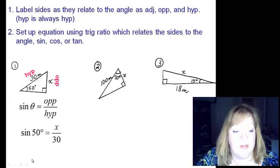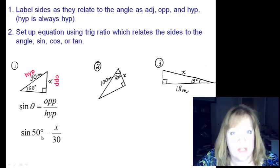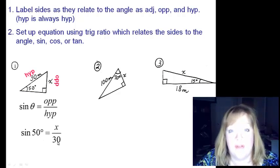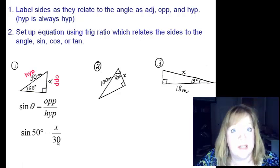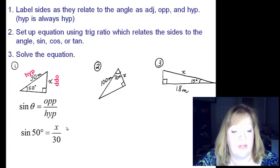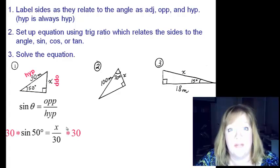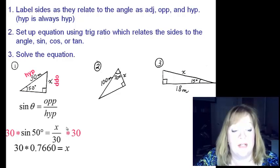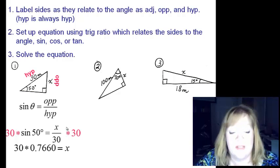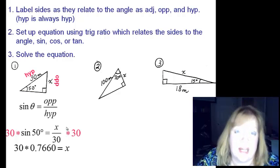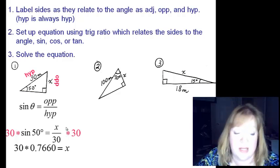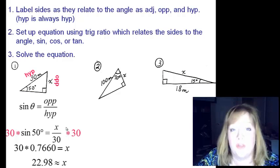So in order to solve this, you solve this just like any equation. Sine of fifty is just some decimal, and this is x divided by thirty. We're solving for x, opposite of division is multiplication. So we're going to multiply both sides by thirty. If you do that on your calculator, you'll get thirty times point seven six six zero, but we have fancy calculators, so we don't have to go through this step.